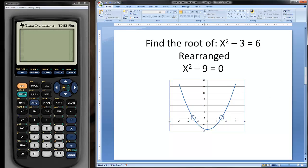So, this is a parabola. This is the equation X² - 9, which you get from rearranging X² - 3 = 6. If you think about what roots are, they're the x-axis intercepts of this equation, and that's what allows this equation to be satisfied.